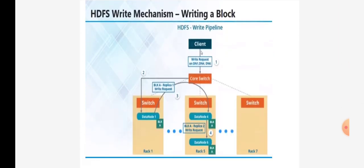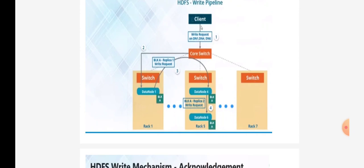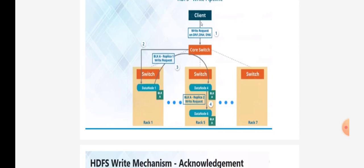Now, talking about the writing in a pipelining fashion — we are moving data in a pipelining fashion. The client will send the write request to DN1, DN4, and DN6, the three IP addresses provided by the name node. The core switch information moves to data node 1. DN1 writes block A and creates replica 1, which moves to data node 4. Data node 4 generates replica 2 of block A and moves it to data node 6. Remember, it is working serially: first DN1 writes block A, then DN4, then DN6.